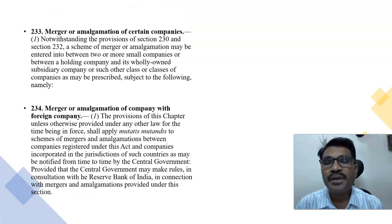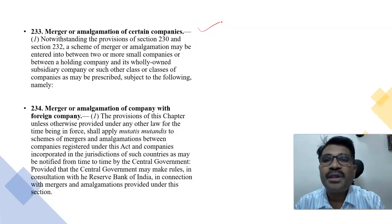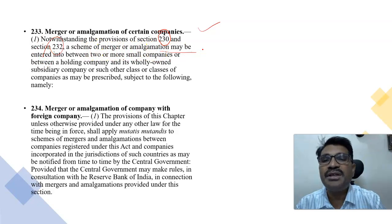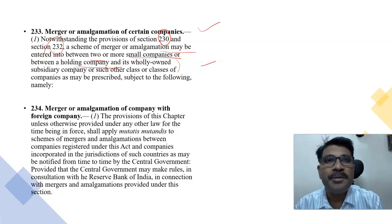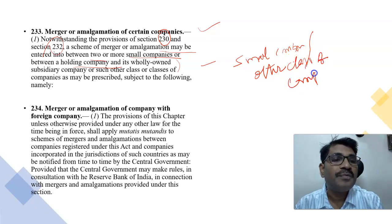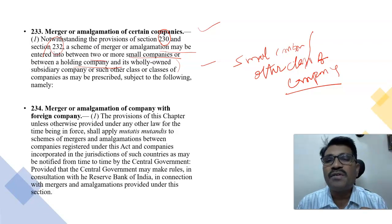Section 233 deals with the merger or amalgamation of certain companies. Notwithstanding anything in Sections 230 and 232, a scheme of merger or amalgamation may be entered into between two or more small companies, or a holding company and its wholly owned subsidiary company, or such other classes. So Section 233 basically applies to small companies or other specified classes of companies. The Companies Act applies for the amalgamations and mergers of companies irrespective of their nature.